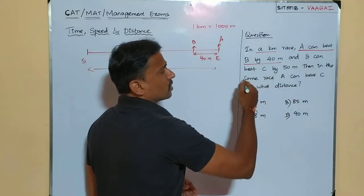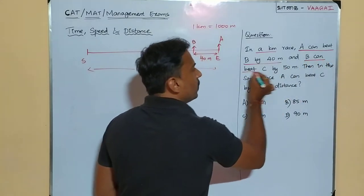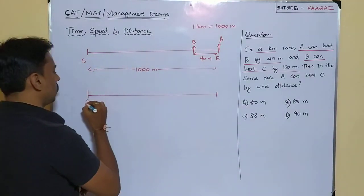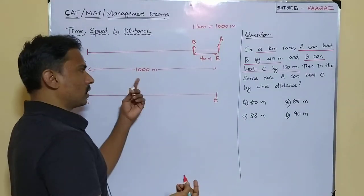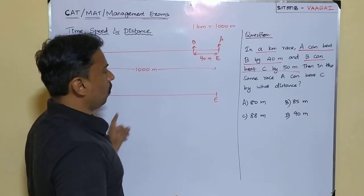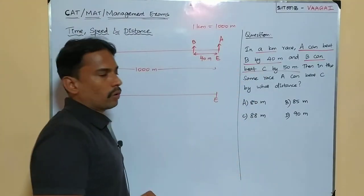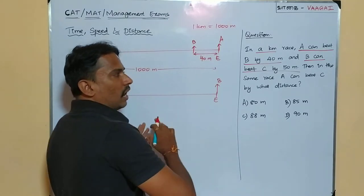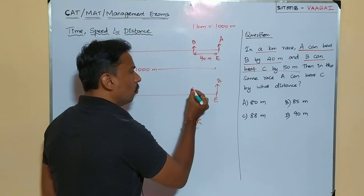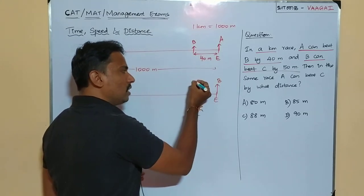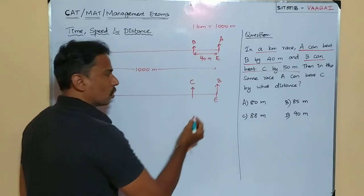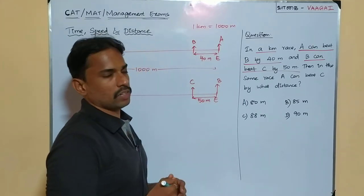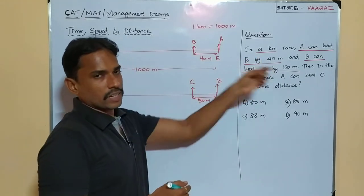Next, B can beat C by 50 meters. Again we use the same 1000-meter track. This time we are comparing B and C. When B is about to finish the race — when B reaches 1000 meters — C is 50 meters behind B. So C is somewhere before the finish line when B finishes. That gap is 50 meters. From the first condition we compared A and B; from the second, we compare B and C.